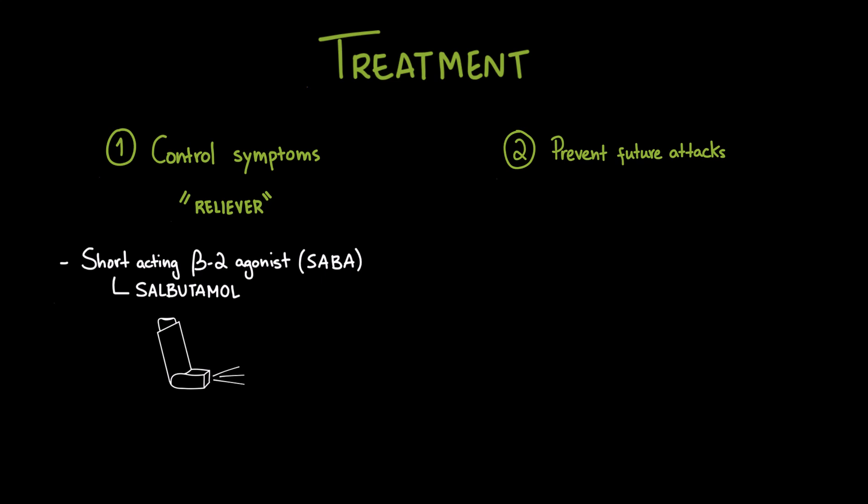That's why long-term management always requires controller medications. The cornerstone here is daily inhaled corticosteroids. These drugs reduce airway inflammation, decrease hyperreactivity, and lower the risk of severe attacks. For patients with more frequent symptoms, long-acting beta-agonists are often combined with inhaled corticosteroids to provide both anti-inflammatory and sustained bronchodilator effects. Other medications include leukotriene receptor antagonists, like montelukast.